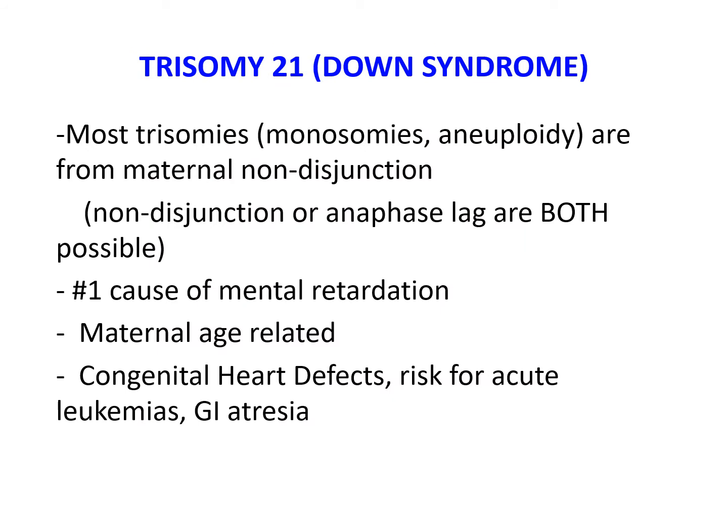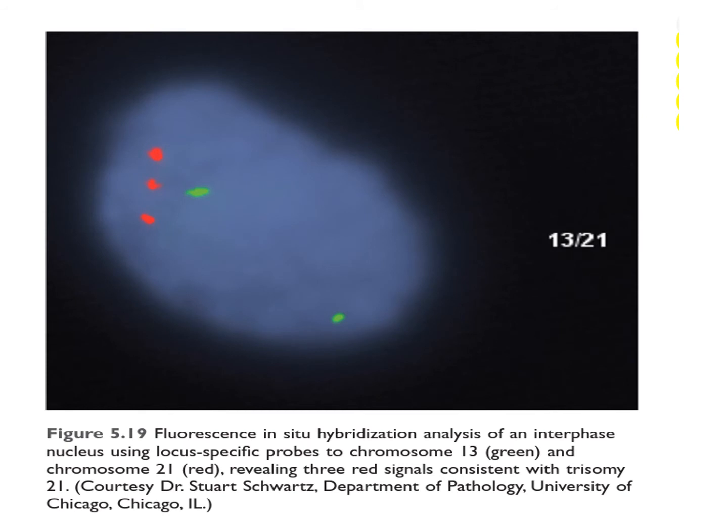In summary, in trisomy 21 or Down syndrome, most trisomies are from maternal non-disjunction. It is the number one cause of mental retardation. It is maternal age-related, with very high risk for mothers above 45 years of age. It is associated with congenital heart defects, risk for acute leukemias, and GI atresia. This FISH analysis of an interphase nucleus using locus-specific probes to chromosome 13 and chromosome 21 reveals three red signals, consistent with trisomy 21.